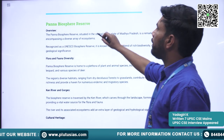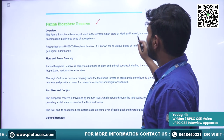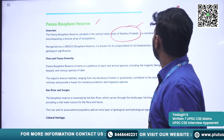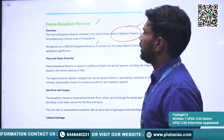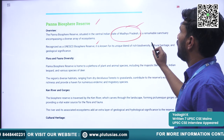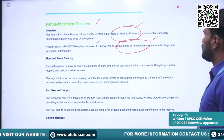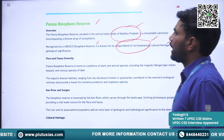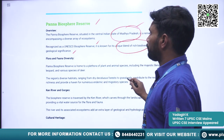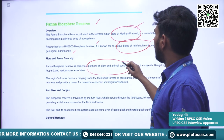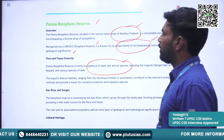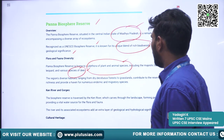Next is Panna Biosphere Reserve. It is located in the central Indian state of Madhya Pradesh and is recognized as a UNESCO Biosphere Reserve, known for its unique blend of rich biodiversity, cultural heritage, and geological significance. It is home to a plethora of plant and animal species including Bengal tiger, Indian leopard, and various species of deer.